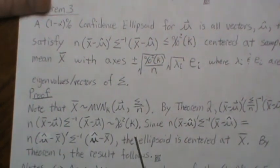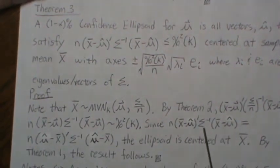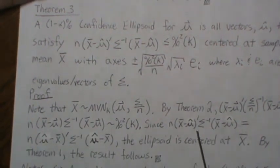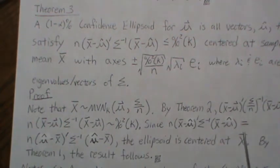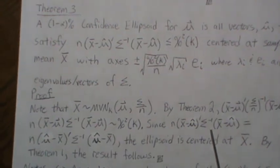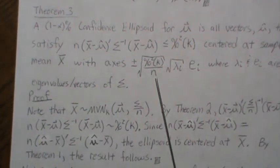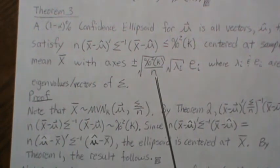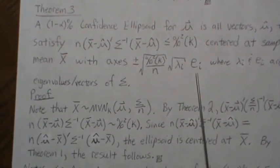Since the quadratic form is chi-squared with k degrees of freedom, requiring it to be less than the alpha cutoff value chi-squared_{k, alpha} means the ellipsoid axes have lengths in the corresponding eigenvector directions.